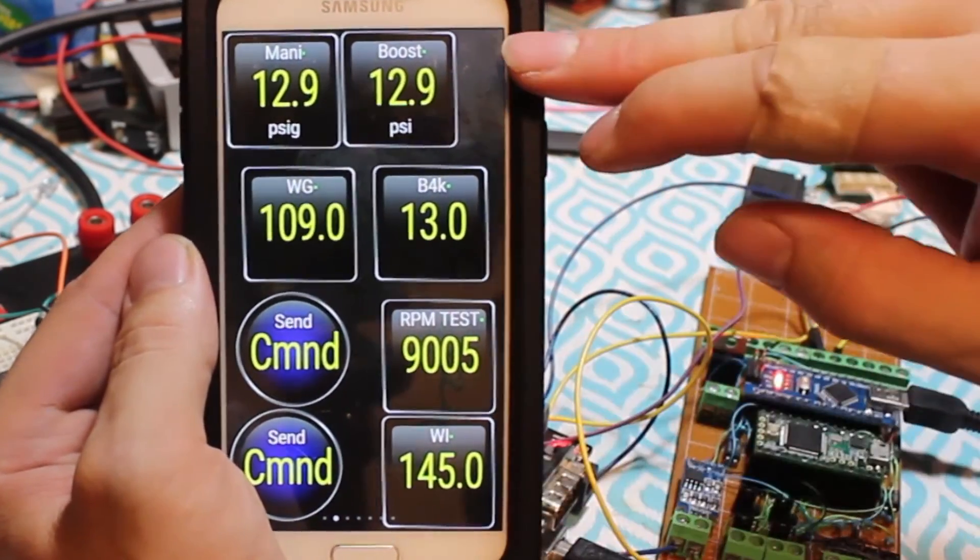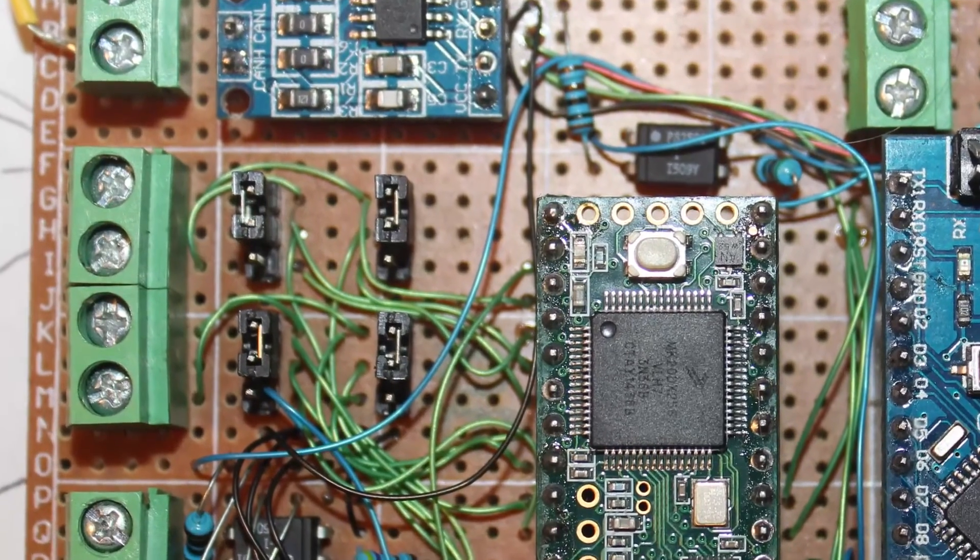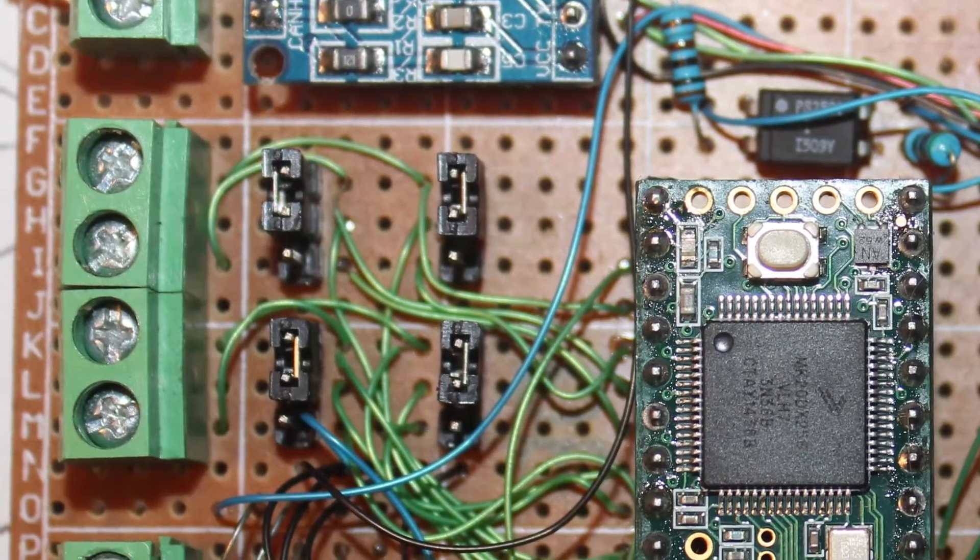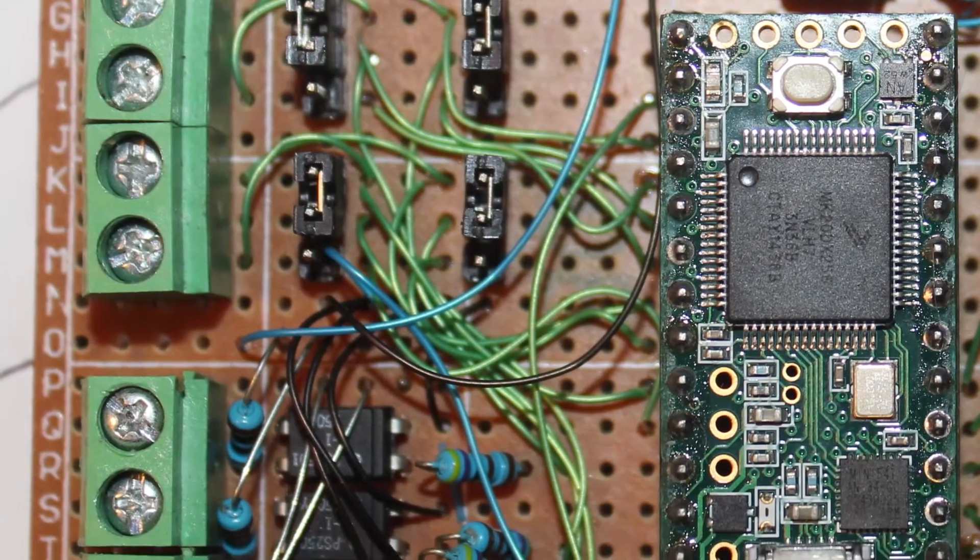On this board I also have four digital inputs. They're set for sensing the ignition coil signals. Also I have four outputs. These send new signals to the coils.